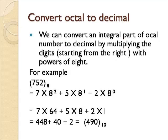In this video we demonstrate the process of converting octal numbers to decimal. We can convert an octal number to decimal by multiplying the digits with the powers of 8. Here you can see that an example is given: 752, which is an octal number — 752 to the base 8.